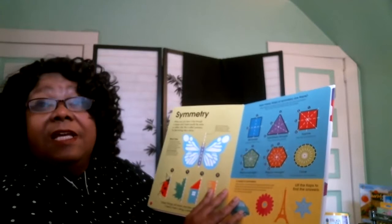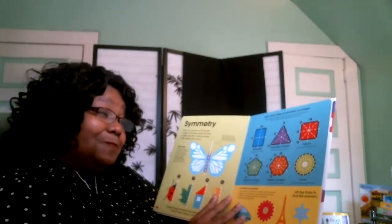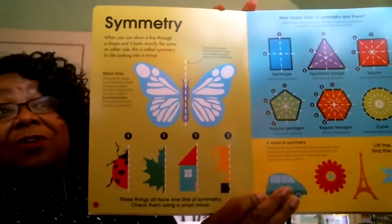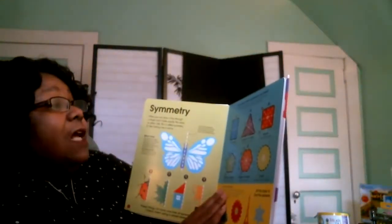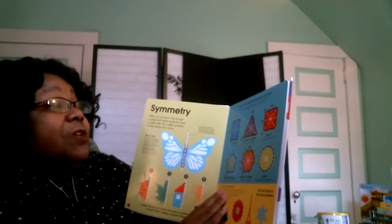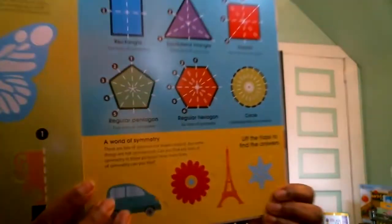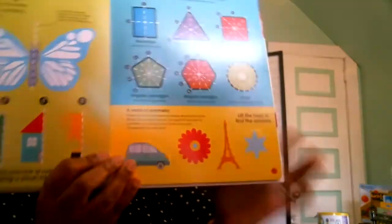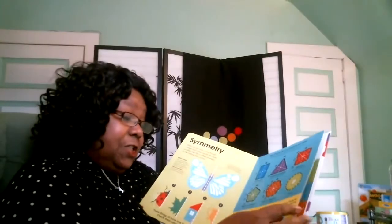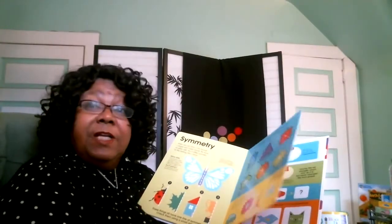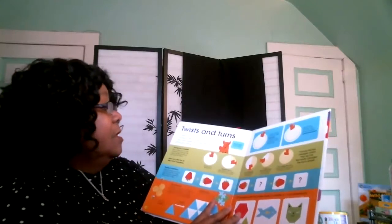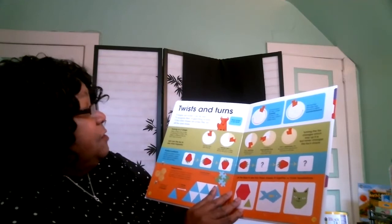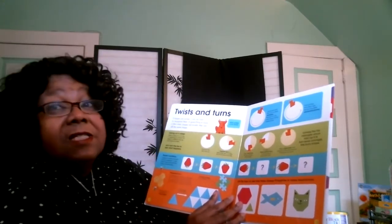It's like you're looking in a mirror. There are more examples here, and on the other side we have questions about how many lines of symmetry there are. You can see it a little better here — it talks about the world of symmetry.